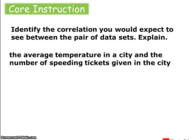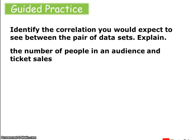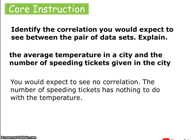We're going to continue to identify the correlation you would expect between different pairs of data. The average temperature in a city and the number of speeding tickets given in the city — will one affect the other? You would expect no correlation. The number of speeding tickets has nothing to do with the temperature.